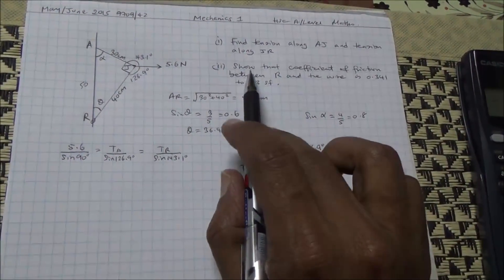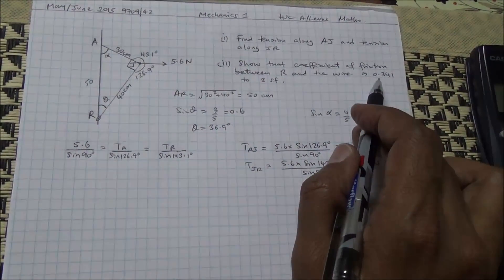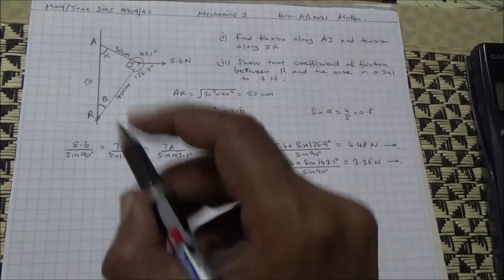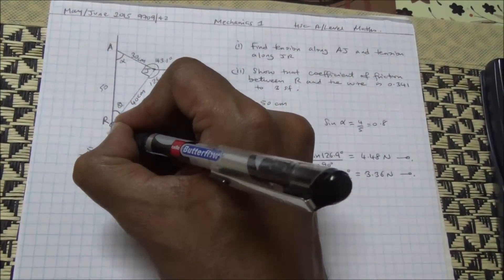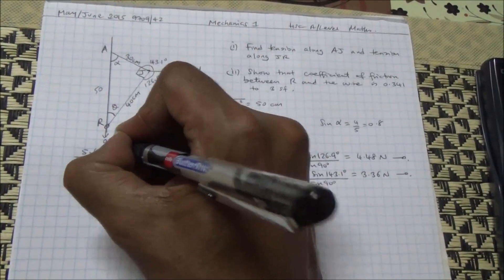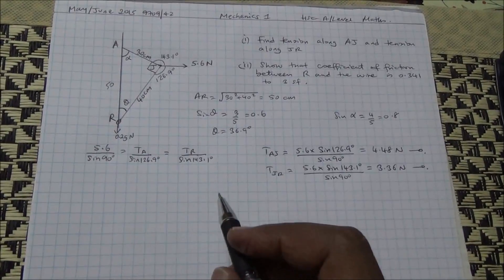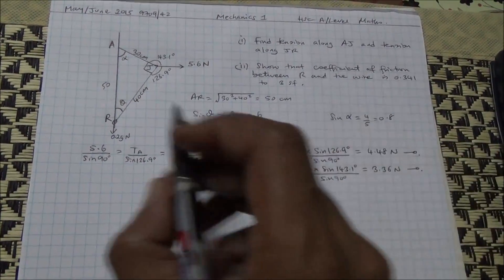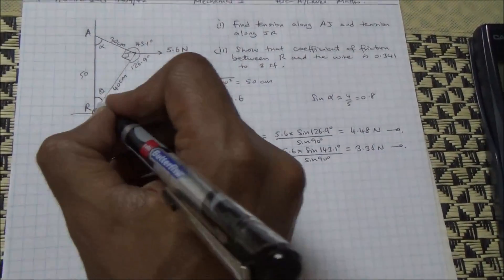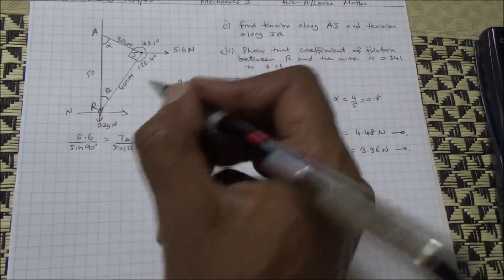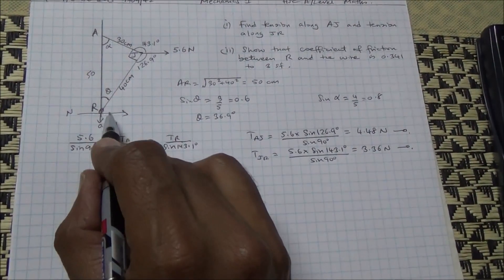Now for the second part, we need to show that the coefficient of friction between R and the wire is 0.341. Remember that the object here has a weight of 0.2g Newtons. In order to be able to find the coefficient of friction, first of all, I'm going to resolve forces horizontally and vertically. If I resolve horizontally in this direction, it doesn't contain the angle.